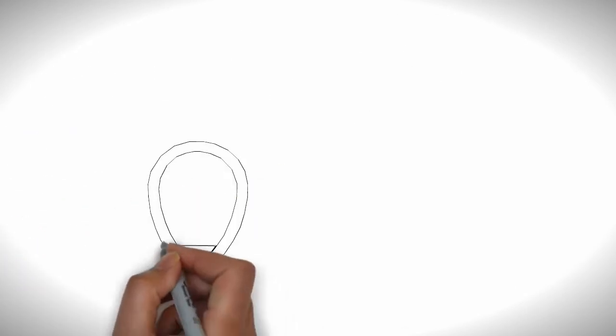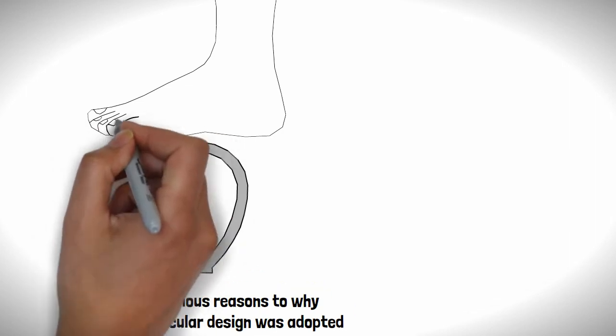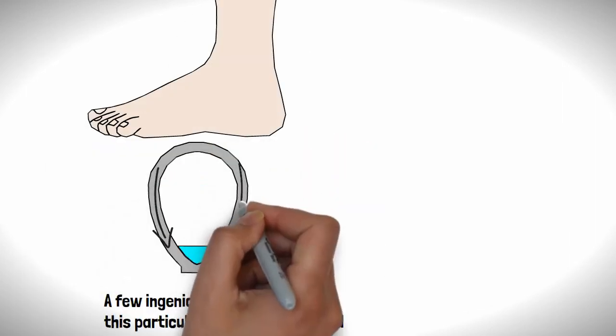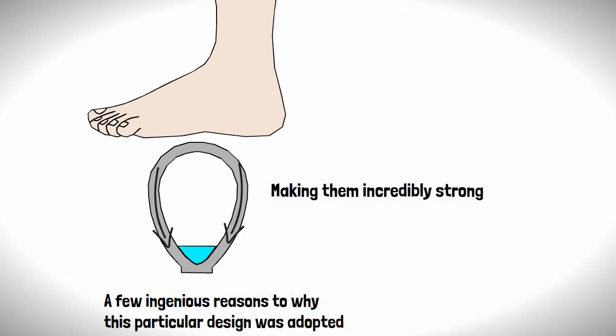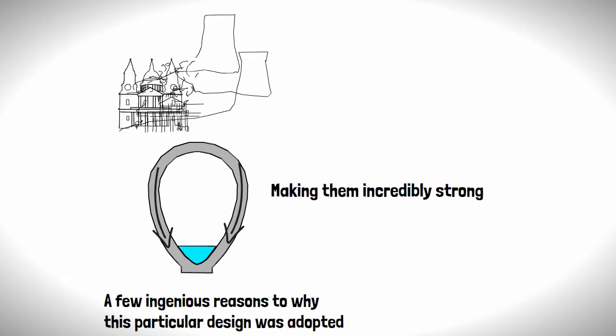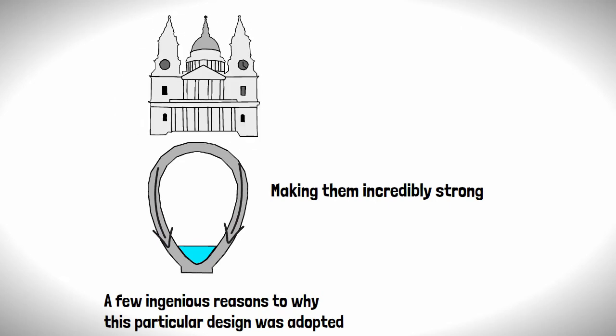The sewers themselves would take the shape of an egg. There were a few ingenious reasons to why this particular design was adopted. As you may be aware from trying to stand on an egg, they are very good at transferring compressive loads, making them incredibly strong, which was important as they had to withstand the weight of development above.